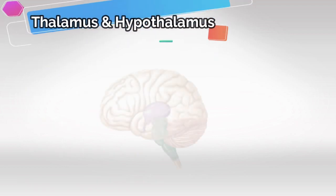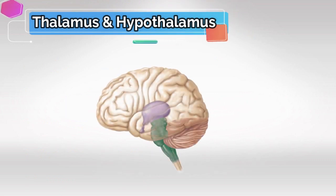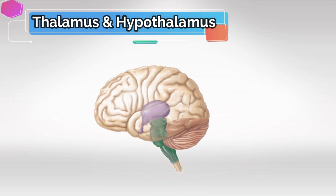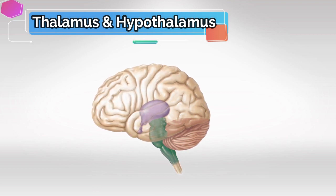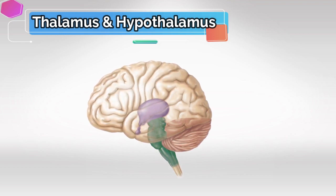For the thalamus and hypothalamus, I would recommend studying everything superficially. Unless you've studied everything else and have nothing left, then you could go deeper into the thalamus and hypothalamus. So again, they're one of those topics to leave for last, unless you have everything else covered.